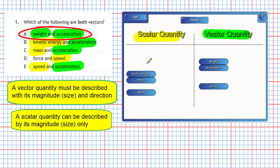Just to complete the question, we can also fill in acceleration here, an acceleration here, an acceleration here, and force the vector quantity. But as you can see from the diagram, we have only got question 1A correct because that's the one that contains weight and acceleration, which are both vectors.